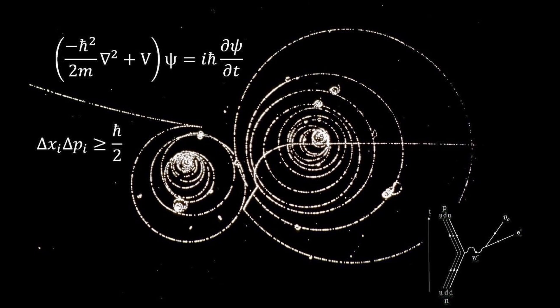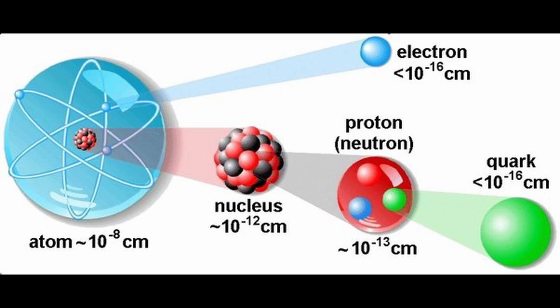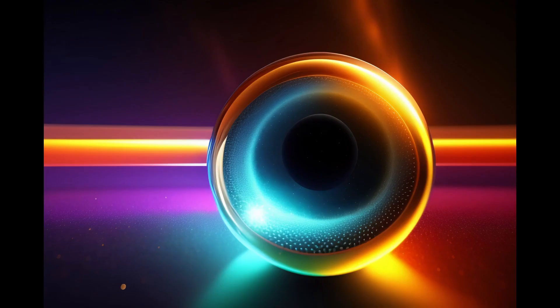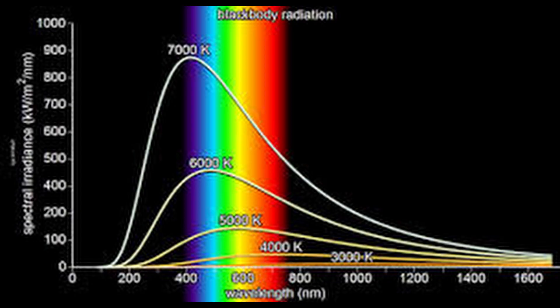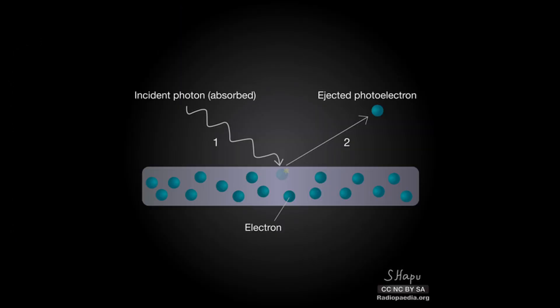History of quantum mechanics: Quantum mechanics is a branch of physics that deals with the behavior of matter and energy at the atomic and subatomic level. It was developed in the early 20th century as a result of a series of experiments and theoretical investigations. The history of quantum mechanics can be traced back to the late 19th century, when physicists began to realize that classical physics was inadequate to explain certain phenomena, like blackbody radiation and the photoelectric effect. In 1900, Max Planck proposed that the energy of light was not continuous, but rather came in discrete packets, or quanta, which could only take on certain specific values.